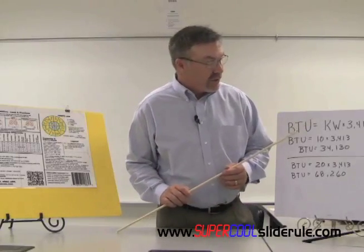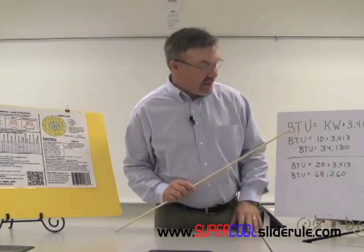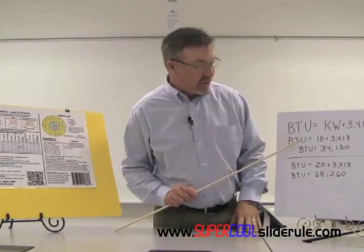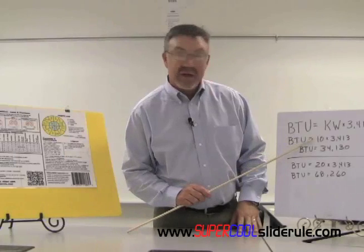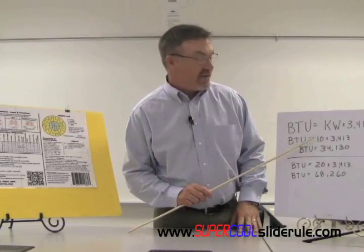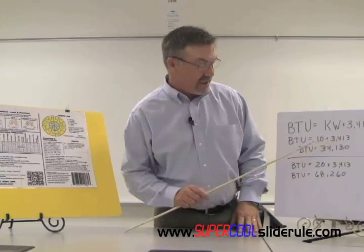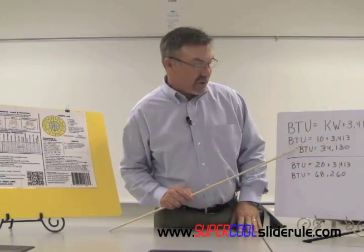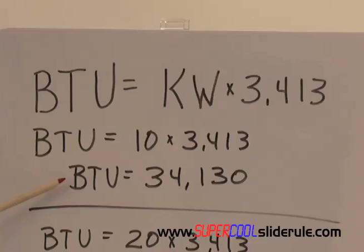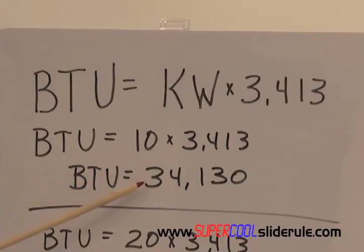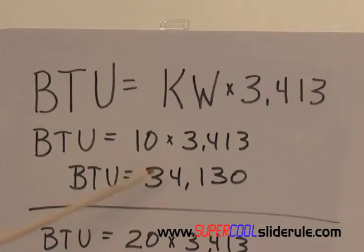We're doing a 10KW heater — it's a very simple formula. It is 10 times 3413. A 10KW heater will give us 34,130 BTUs of heat.